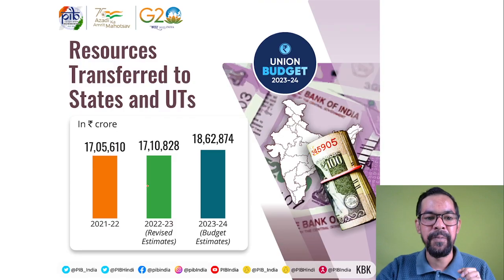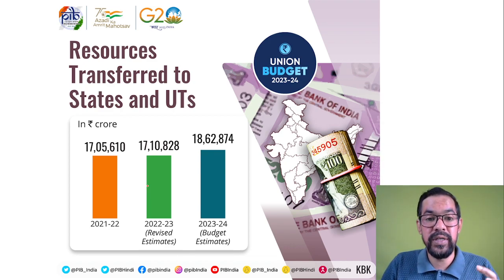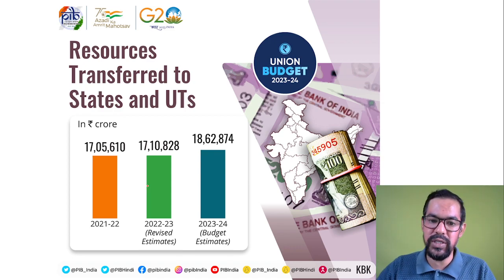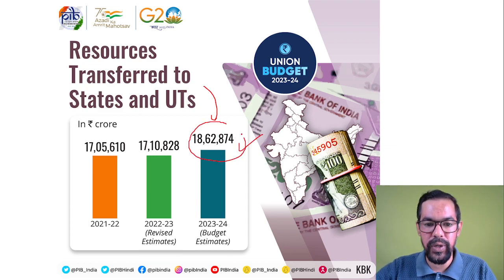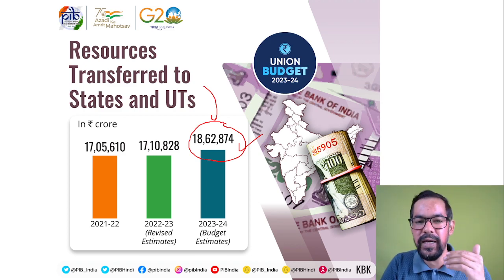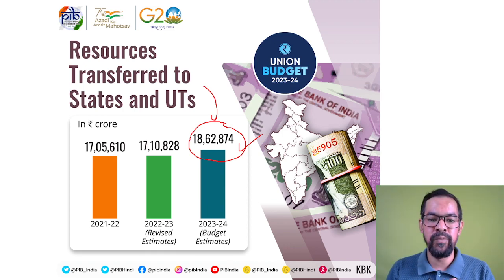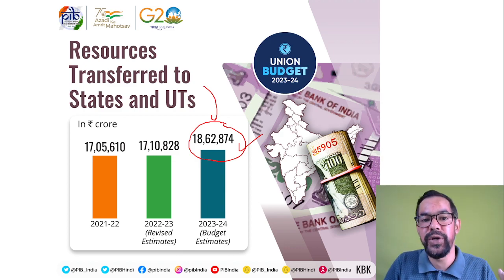If income is collected by the central government, it distributes it to state governments. This year, the central government will transfer around 18.62 lakh crore rupees to the state governments, which represents a slight increment compared to the previous year. The government is planning to transfer more money to states.